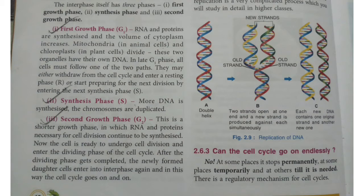In the first growth phase, G1, RNA and proteins are synthesized and the volume of cytoplasm increases. Mitochondria in animal cells and chloroplasts in plant cells divide — these two organelles have their own DNA. In late G1 phase, all cells must follow one of two paths: they may either withdraw from the cell cycle and enter a resting phase (R), or start preparing for the next division by entering the synthesis phase (S).